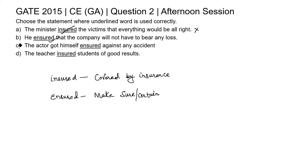The sentence in option C states: 'The actor got himself insured against any accident.' Here, 'ensured' (e-n-s-u-r-e-d) is used wrongly. The word should be 'insured' (i-n-s-u-r-e-d) because the actor got himself covered by insurance against any accident. So the sentence in option C is wrong.